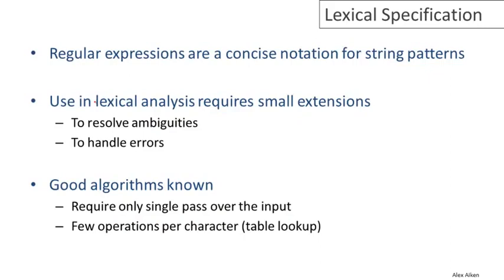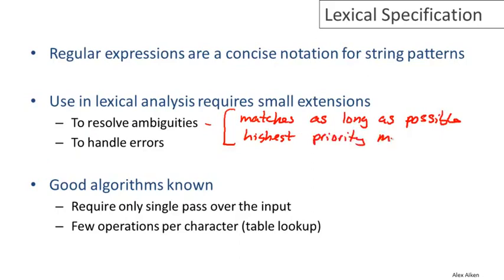To wrap up this video, regular expressions are very nice and concise notation for string patterns. But to use them in lexical analysis requires a couple of small extensions. So in particular, there's a couple of ambiguities we have to resolve. We want our matches to be as long as possible. So we take as much input at a time as we can. And we also want to choose the highest priority match. So the regular expressions are given a priority. The different token classes have priorities. And when there's a tie, when the same prefix of the input can match more than one, we pick the one that has the highest priority. And typically this is done just by listing them in order in a file. And the ones listed first have higher priority over the ones listed later. I just want to warn you that when you go to write lexical specifications, when you go to actually implement a lexer for a language,